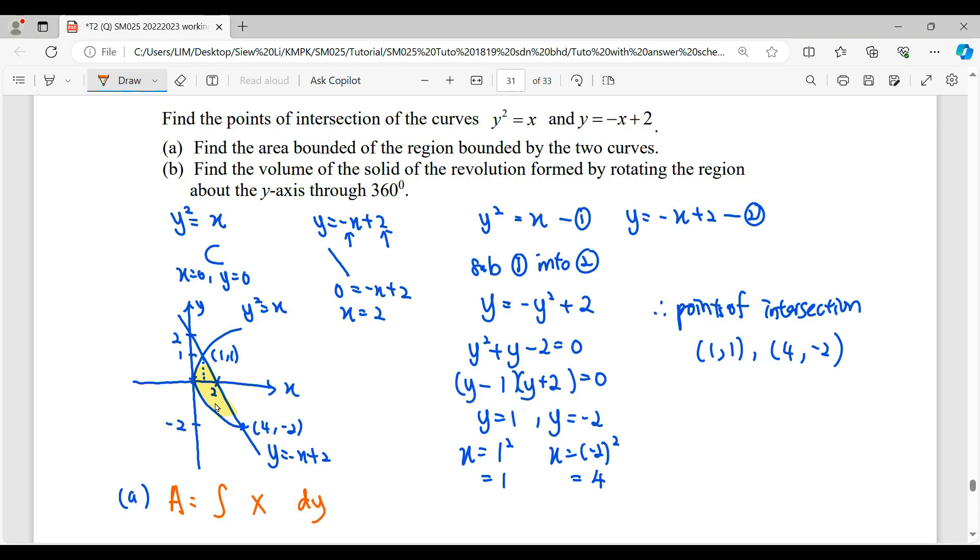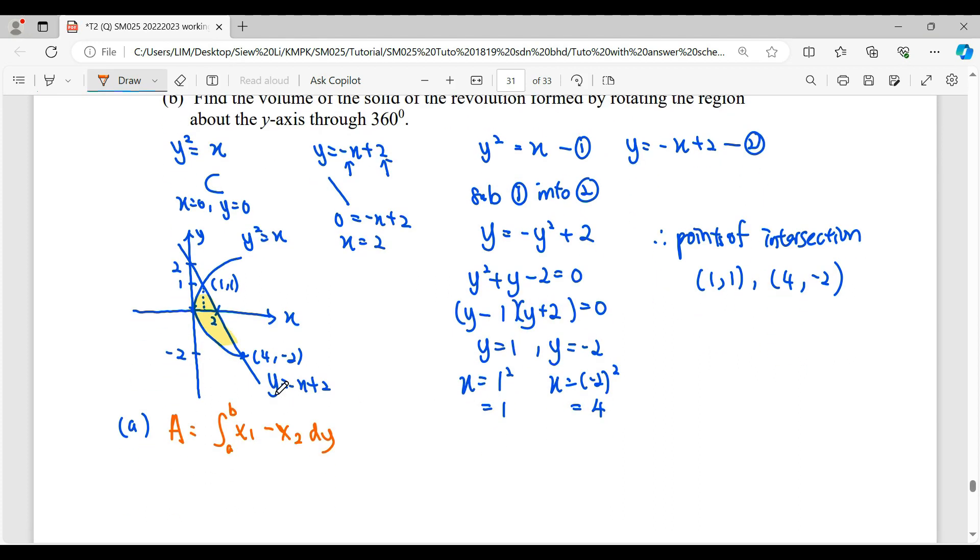So the equation here must be in term of x. So you have this area in two-curve concept, means it will be the right-hand side minus the left-hand side. Then from the lower limit to upper limit. So when we're doing the area regarding y-axis, we will only analyze it horizontally. So horizontally, lower limit -2, upper limit 1.